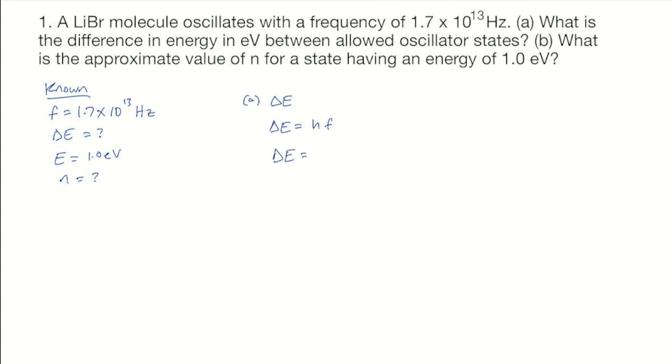We can substitute the values. h is 6.626 times 10 to the minus 34 joules times seconds. We're going to need this in eV, so let's just convert that now. 1 electron volt is 1.60 times 10 to the minus 19 joules. That takes care of h. Our frequency is 1.7 times 10 to the 13 hertz.